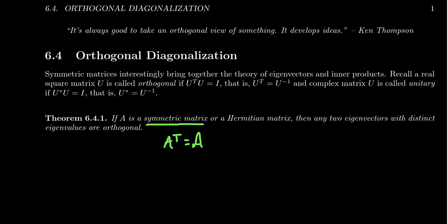Related to the idea of a symmetric matrix is that of a Hermitian matrix. A Hermitian matrix is the complex counterpart of a symmetric matrix where A star equals A, where star is the conjugate transpose operation for complex matrices. Every real symmetric matrix is in fact a complex Hermitian matrix, since for every real number, the complex conjugate doesn't change anything.